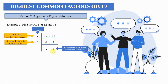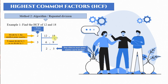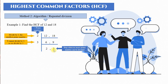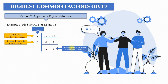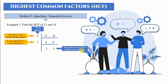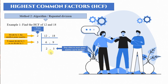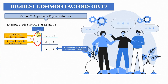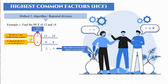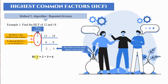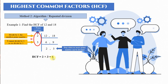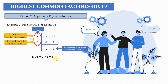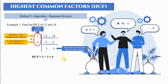Now, no more prime number can divide both remaining numbers. If we divide by 2, the 3 cannot. If we divide by 3, the 2 cannot. So we stop here — stop when no more prime number can divide both. Our HCF is the product of the divisors used: 2 times 3. So HCF equals 6.